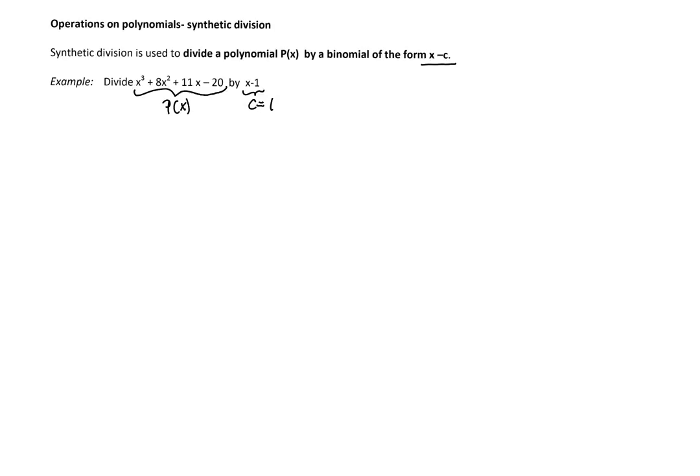We'll start with writing the polynomial P(x), which is the dividend in the standard form, in the order of decreasing powers of x. If you look at our polynomial, it is already in the standard form.